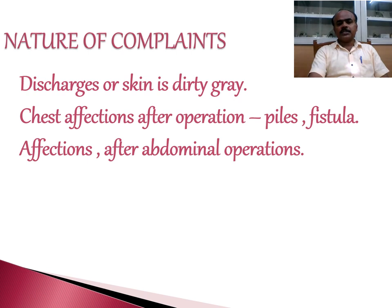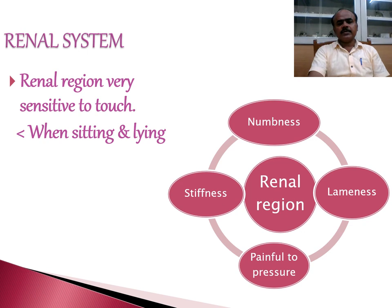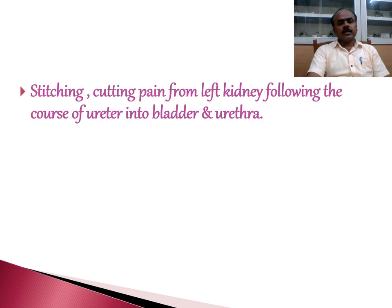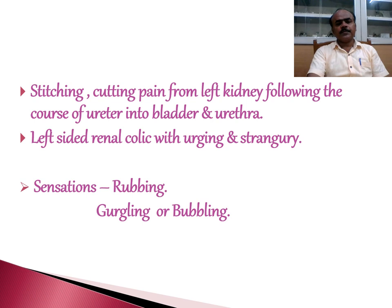Berberis Vulgaris has a chief action on the renal system. In the renal system it produces numbness and lameness which is painful on pressure, with a sort of stiffness in that region. This region is very sensitive to touch and is aggravated by sitting and lying down. There is burning and soreness in the renal angle, and a rubbing, curling, or bubbling sensation found in the renal angle.